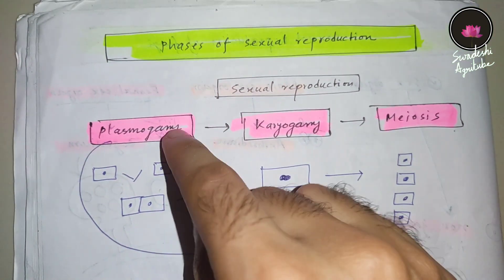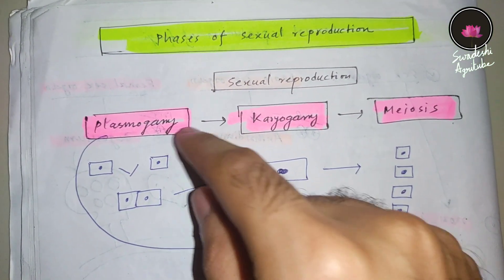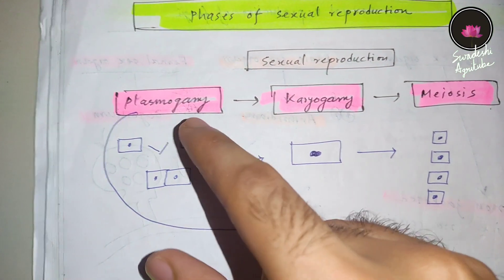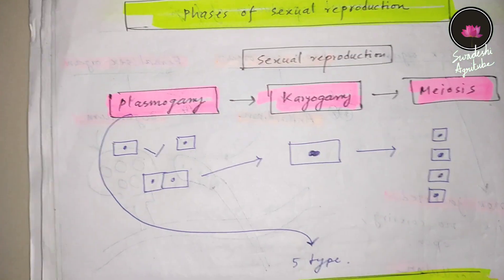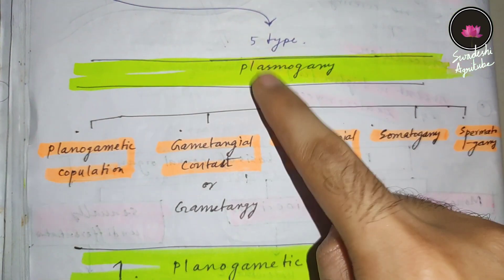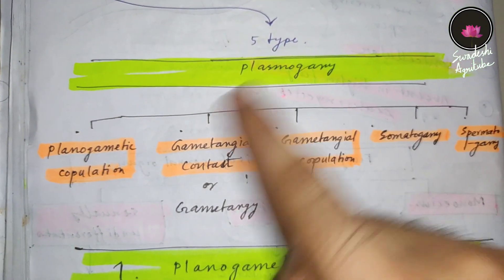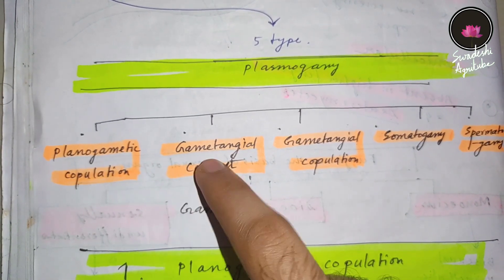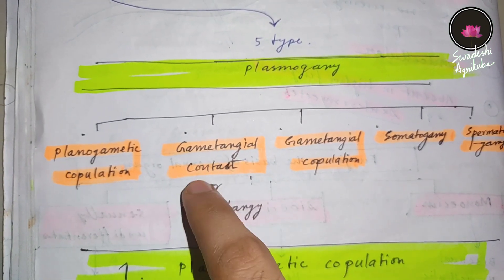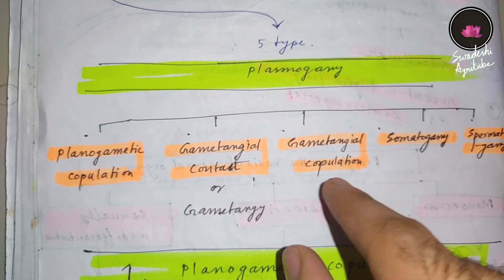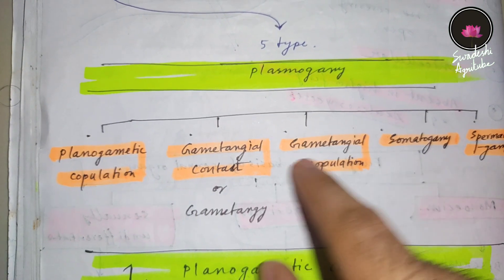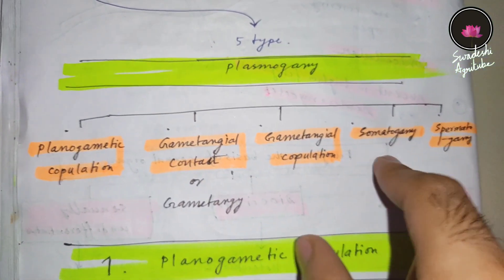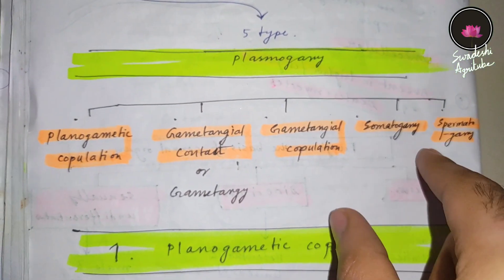Plasmogamy can happen in five ways, meaning there are five types of plasmogamy. The first is planogametic copulation, the second is gametangial contact, the third is gametangial copulation, the fourth is somatogamy, and the fifth is spermatogamy.